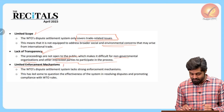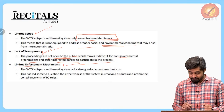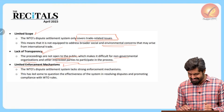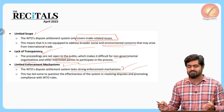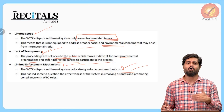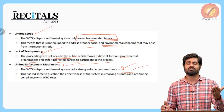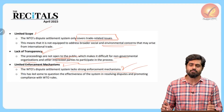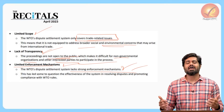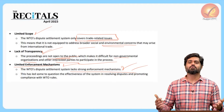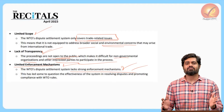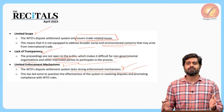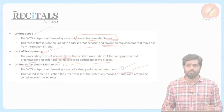Fifth criticism: limited enforcement mechanism. The body lacks a strong enforcement mechanism, as seen recently when the USA blocked the appointment of appellate tribunal members, causing the dispute settlement mechanism to come to a state of paralysis.